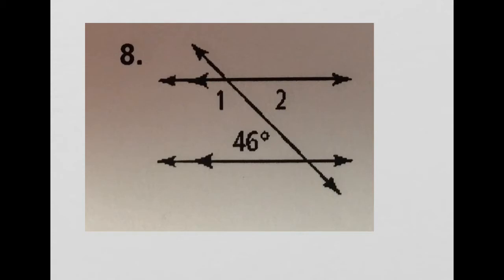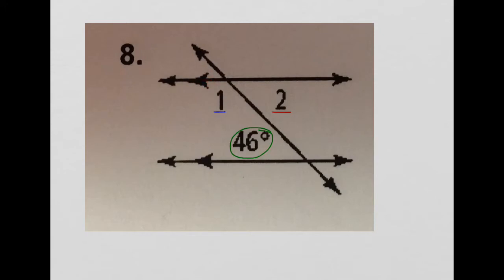We're given that this angle here is 46 degrees, and we're asked to find the measure of angle 1 and the measure of angle 2. This angle here and angle 2 are alternate interior angles — they are non-adjacent, they lie in between our two lines, and they are on opposite sides of our transversal. The markings show these two lines are parallel, so alternate interior angles are congruent. The measure of angle 2 is 46 degrees.